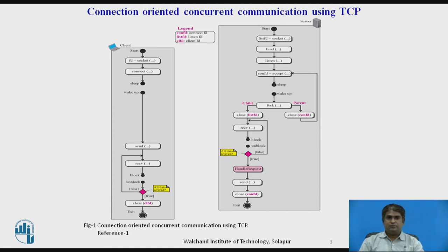The child process is now ready to serve the client. The receive function, like the receive-from function, is a blocking one. The server may use other functions to receive and send data, choosing the one appropriate for the particular application. Here, we assume that the size of the data to be sent to the client is so small that it can fit into one single segment. Otherwise, we need a loop to repeatedly call the send function. The server may send data using one single call to the send function, but TCP may use several segments to send the data.